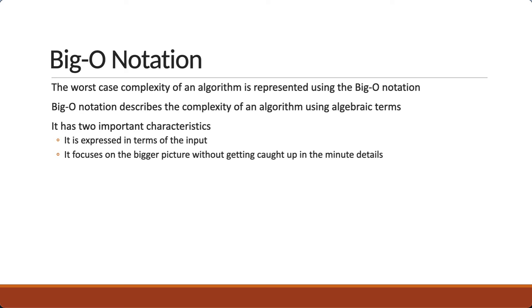The Big-O notation has two important characteristics. One, it is expressed in terms of the input. And two, it focuses on the bigger picture without getting caught up in the minute details. Let's understand these two points under the context of time complexity. We can then extend that knowledge to understand space complexity.